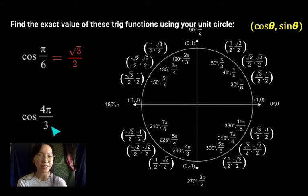The next one is cosine of 4 pi over 3. So same idea, you want to find the x value of the coordinates where you find the angle of 4 pi over 3. So see if you can find 4 pi over 3.